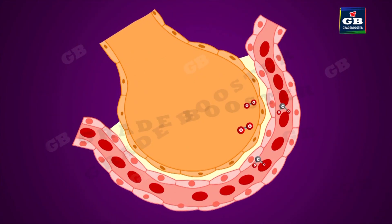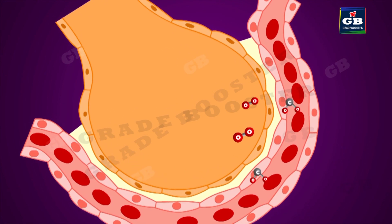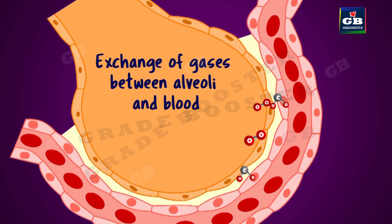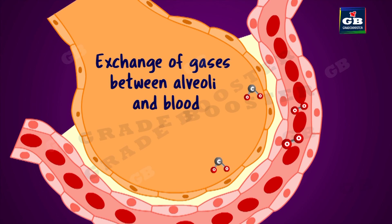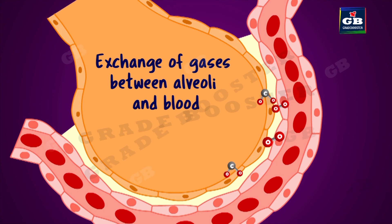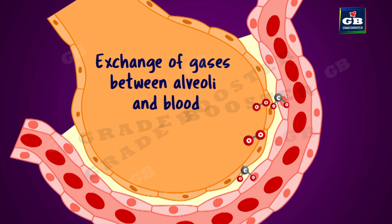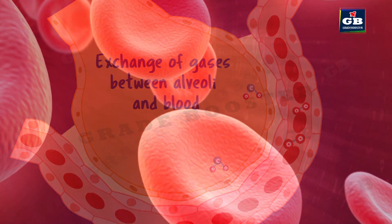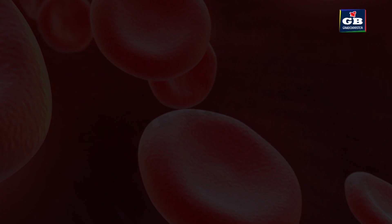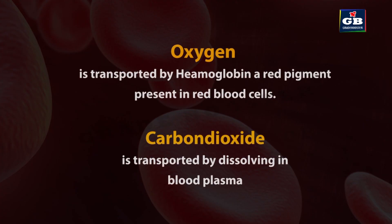The wall of the alveoli has a network of blood capillaries, where the exchange of gases takes place between the blood and alveoli. Blood coming from the body parts has more carbon dioxide, while air entering the alveoli has more oxygen. Due to this difference, gas exchange occurs — oxygen is transported by a pigment called hemoglobin present in the RBC of blood, and carbon dioxide is transported by blood in dissolved form.